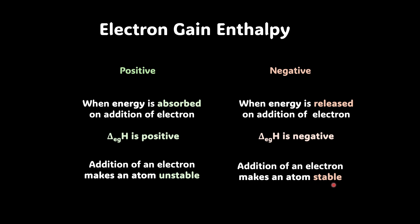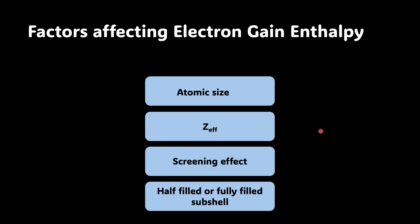Now let's explore the factors affecting electron gain enthalpy: atomic size, effective nuclear charge, screening effect, and half-filled or fully filled subshells. Let's see them one by one.